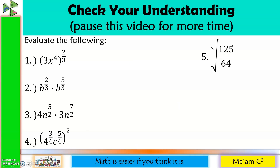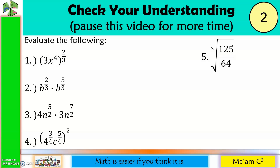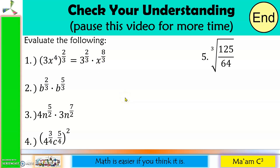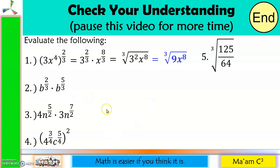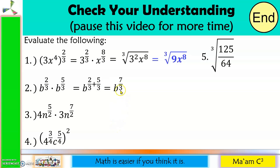Now it is time to check your understanding. Pause the video for more time. Number 1: distributing the exponents gives 3 raised to 2 thirds times x raised to 8 thirds, since 4 times 2 is 8. The denominator 3 becomes the index, so this becomes the cube root of 3 squared times x to the 8th power. Since 3 squared is 9, the answer is the cube root of 9x to the 8th power. Number 2: copying the base B and adding the exponents — they are similar fractions — 2 plus 5 is 7, giving B raised to 7 over 3. The answer is the cube root of B to the 7th power, or the quantity cube root of B, raised to the 7th power.